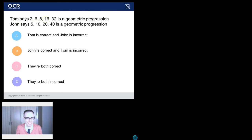Tom says 2, 6, 8, 16, 32 is a geometric progression. What the heck is Tom on about there? John, I mean, what a conversation these two are having, says 5, 10, 20 and 40 is a geometric progression. Bottom line, who's right? Tom, John, whatever.